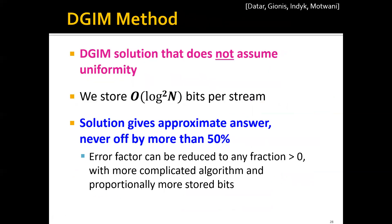And this is why we need the DGIM solution, which does not assume uniformity. In this algorithm, we only need to store O(log²N) bits per stream, so it's actually using very, very small space.